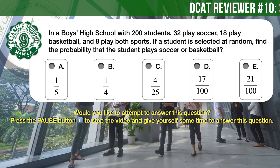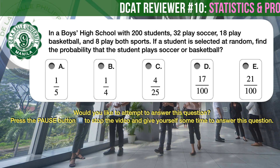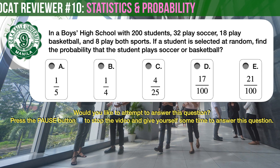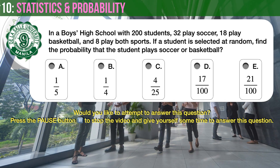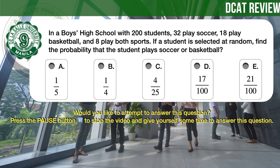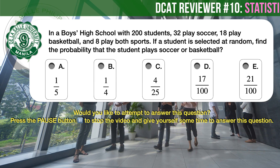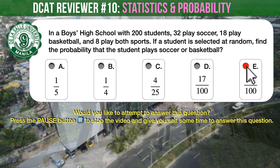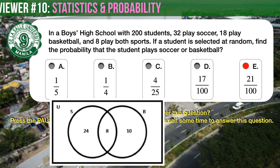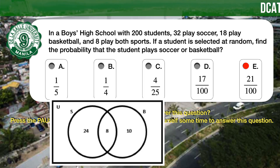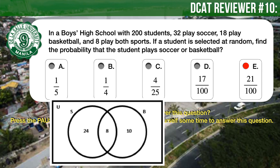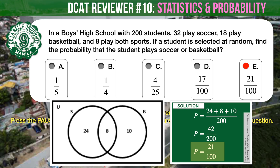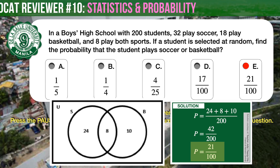Question number 9. In a boys' high school with 200 students, 32 play soccer, 18 play basketball, and 8 play both sports. If a student is selected at random, find the probability that the student plays soccer or basketball. The given values can be represented by a Venn diagram. From the diagram, the probability is 21 over 100.